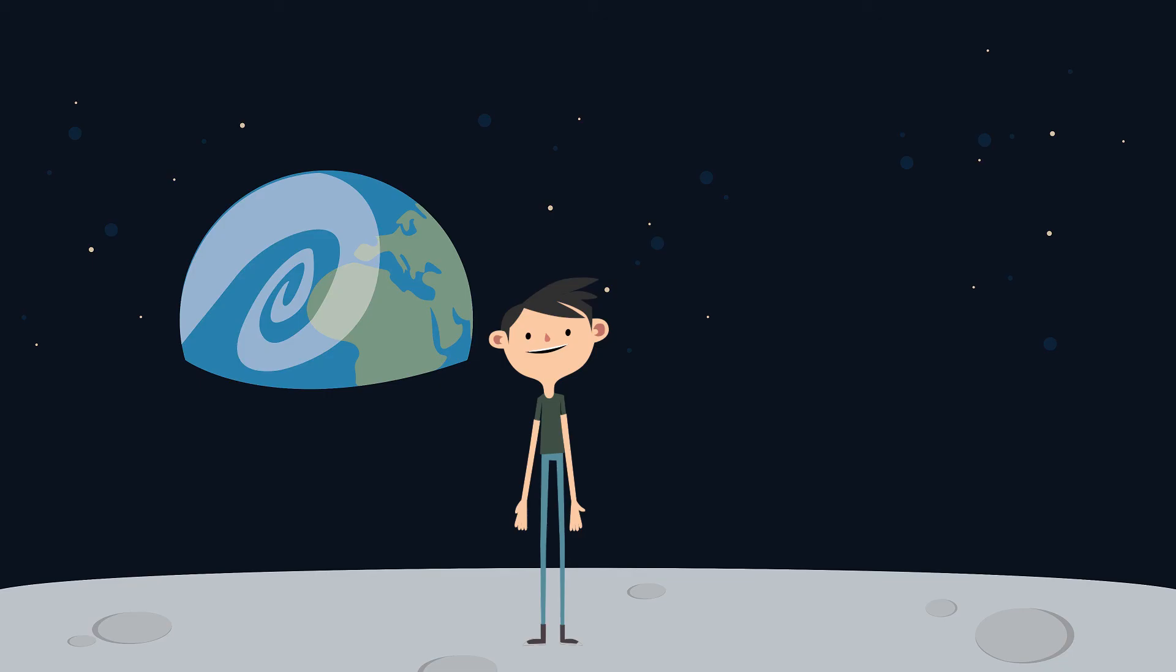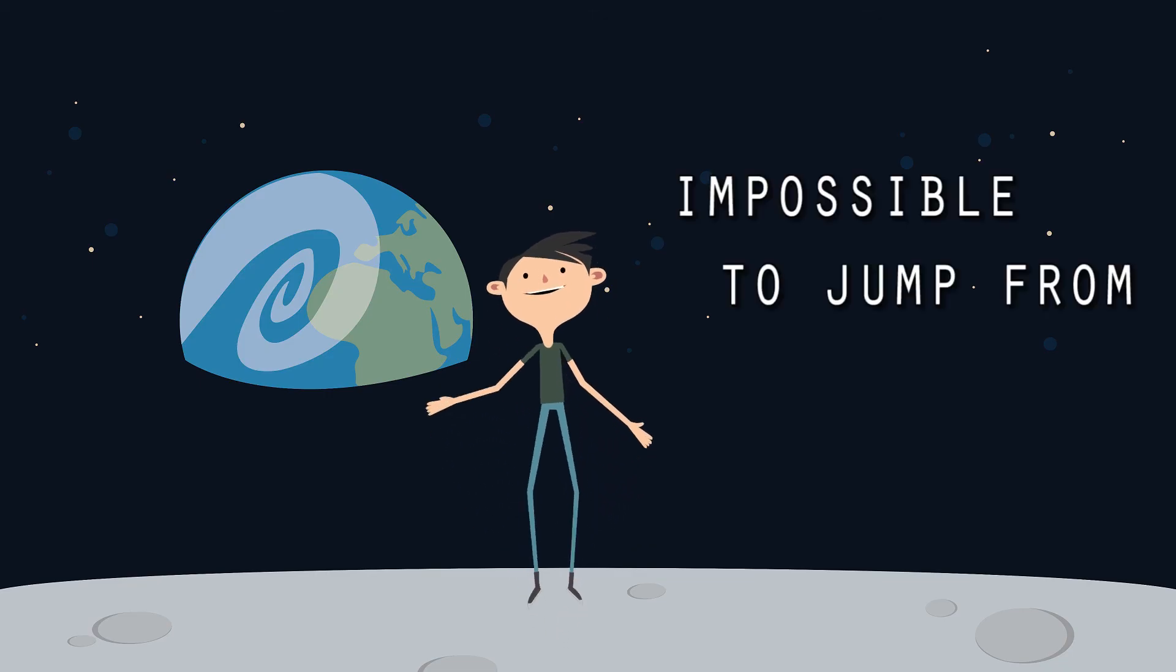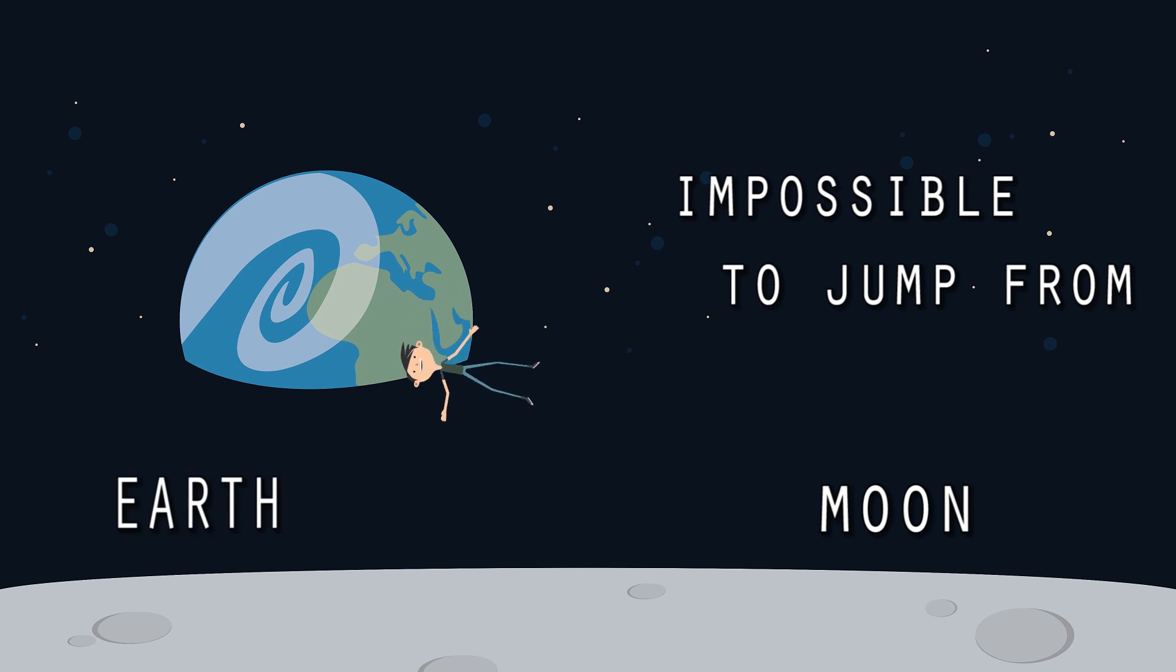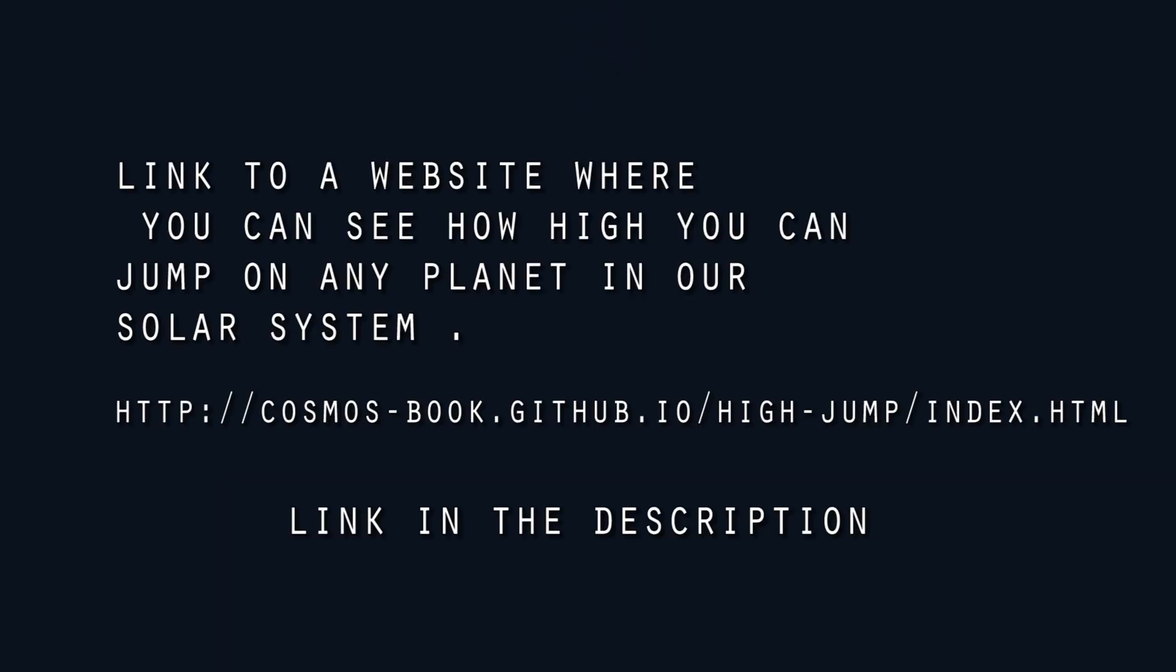So it's nearly impossible to jump from moon to earth. But if you jumped on comet 67P, you would just float off into the void of space. Here is a link to a website where you can see how high you can jump on any planet in our solar system.